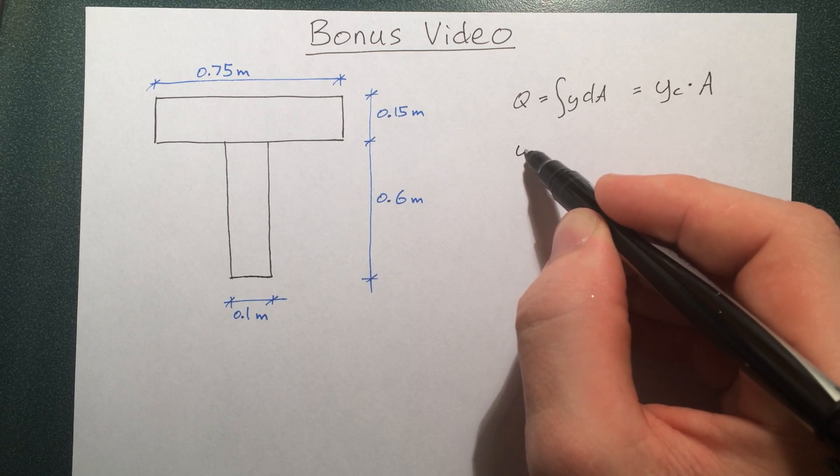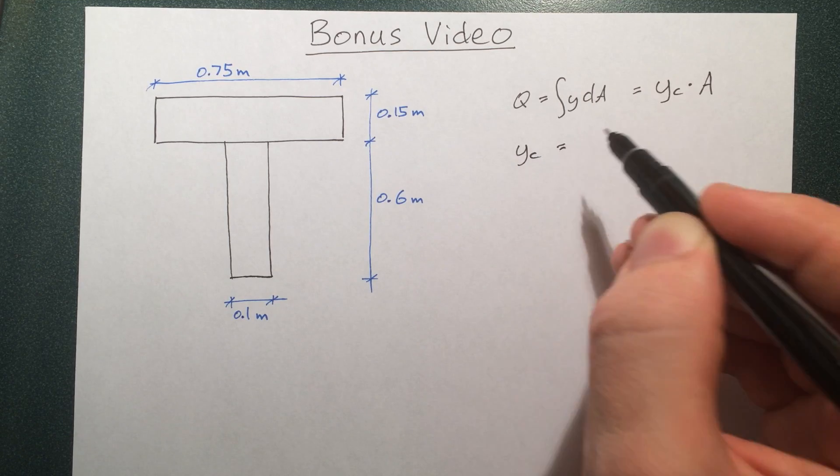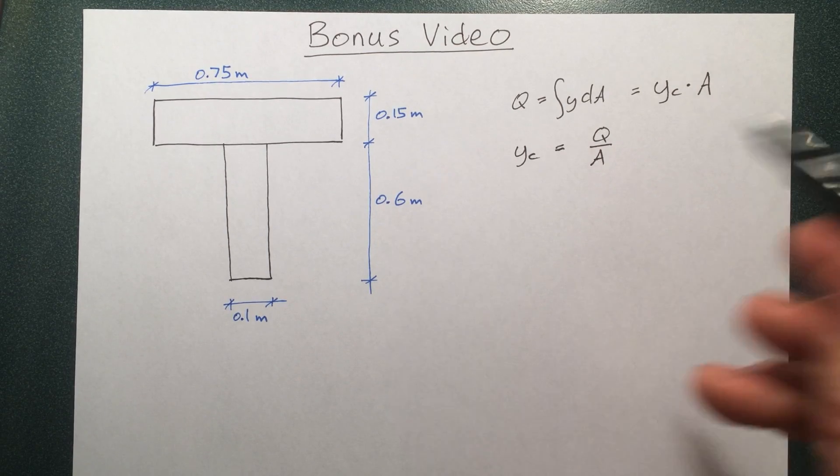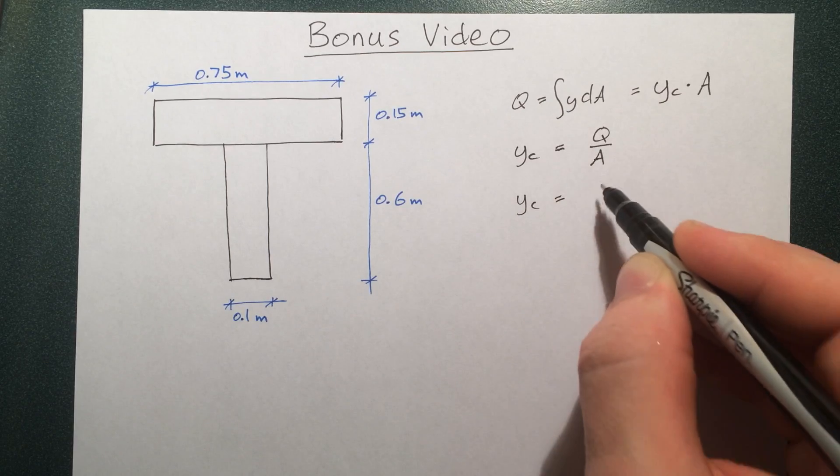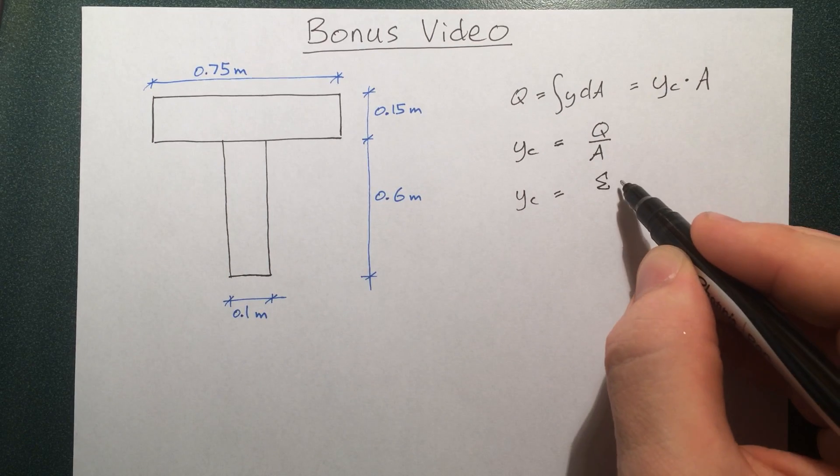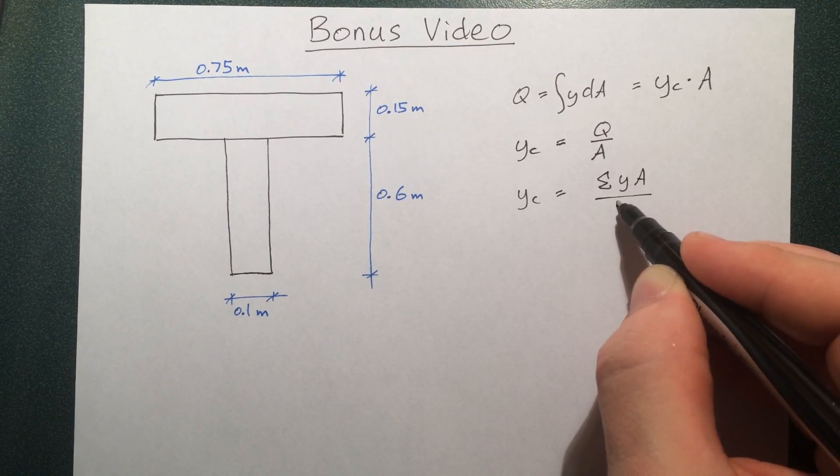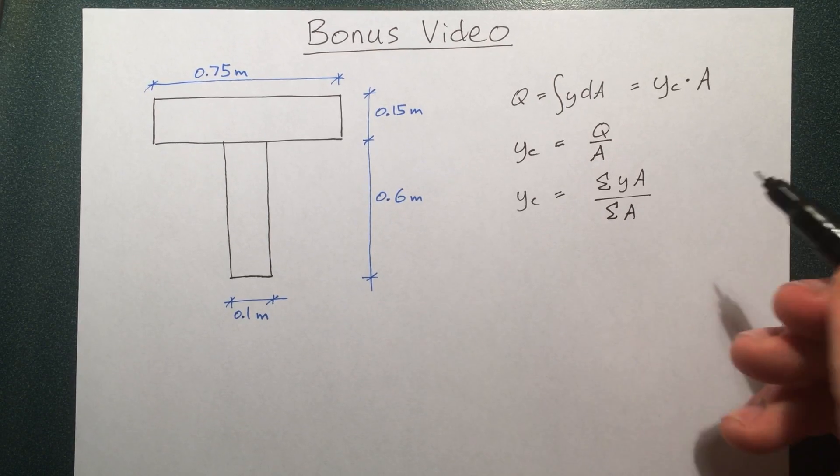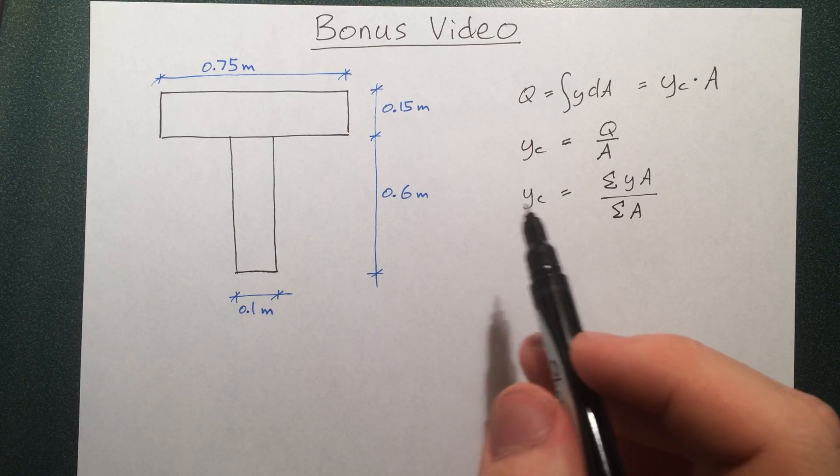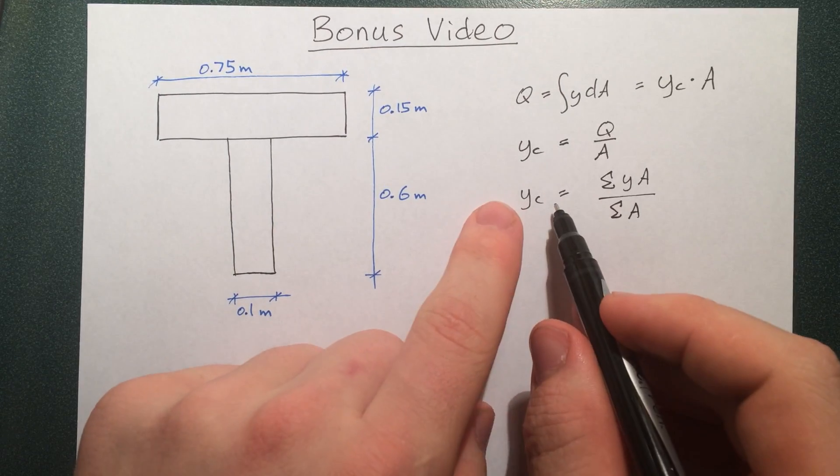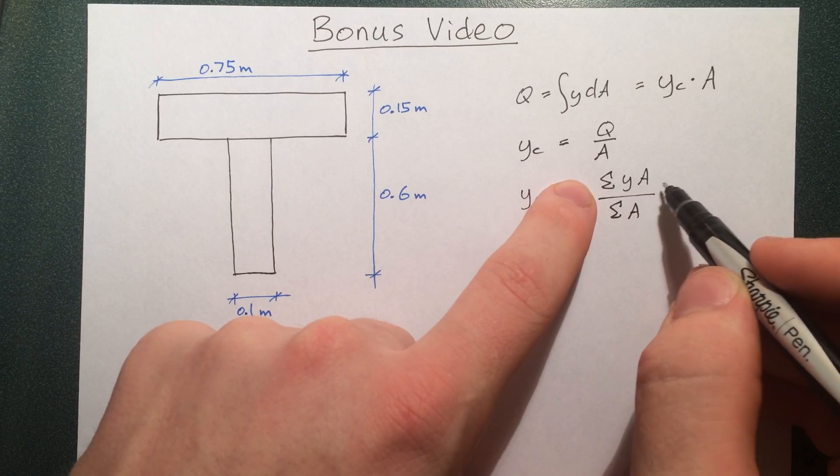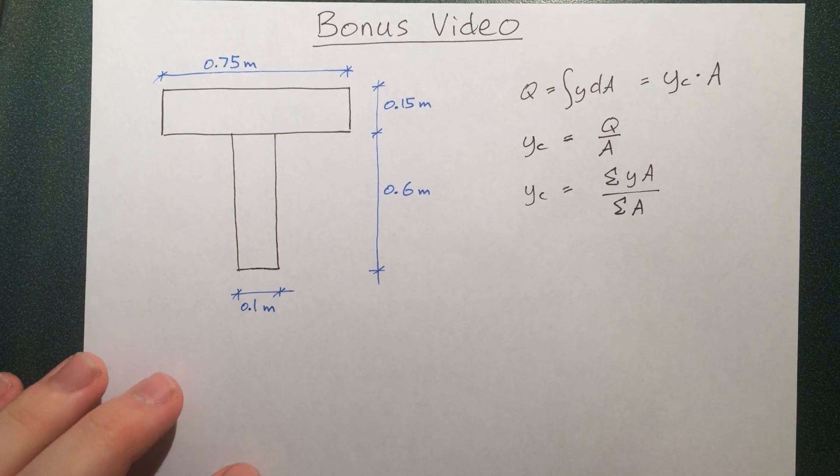We can find the centroid by calculating Q divided by A. So we can rewrite that and say the centroid is equal to the sum—or the integral in this case—but since we're doing finite chunks, we're going to say it's the sum of yA over the sum of the area. The sum of the area is just the total area. You can prove this by multiplying and saying that the centroid times the area of the piece must equal the centroid of all the individual pieces times their individual areas.